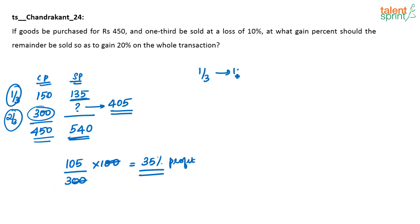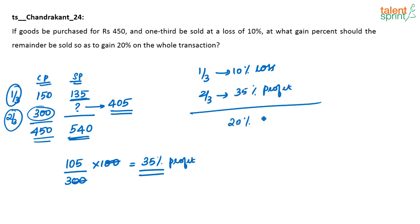To summarize: one-third of the goods is sold at 10% loss, and two-thirds of the goods is sold at 35% profit, and net-net this results in a profit of 20%. Goods worth 150 rupees were sold at 135. Goods worth 450 were sold at 540, giving 20% profit. So goods worth 300 were sold at 405 rupees — find the profit percentage, which is 35%. Thank you.